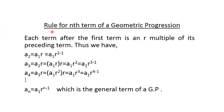Now we discuss the rule for the nth term of geometric progression. Each term after the first term is an r multiple of its preceding term. Thus we have: a2 = a1·r, which we can write as a1·r^(2-1), so r की power 2 minus 1 equal to r बन जाती है।